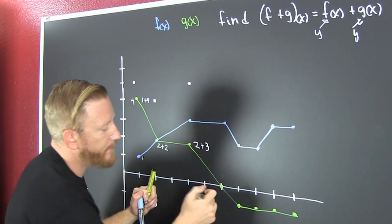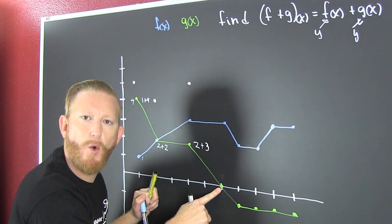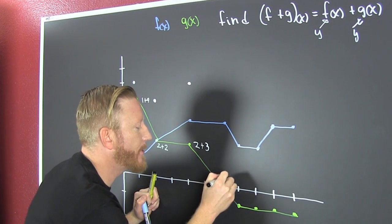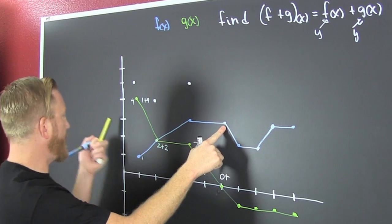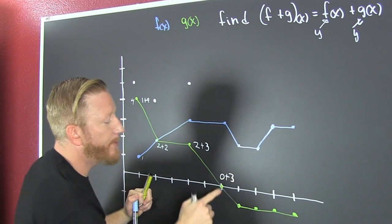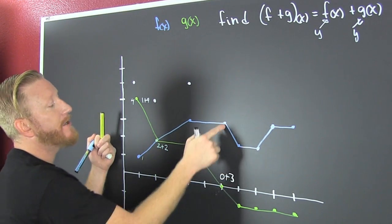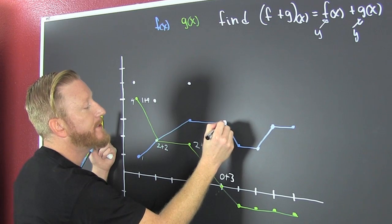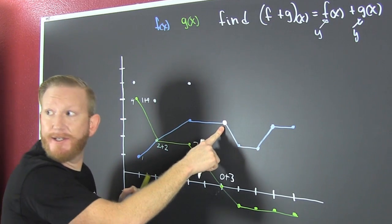Now, what's this X value? Oh, pardon. What's this Y value? Zero. Plus, what's that Y value? Three. Zero plus three is three. So my next value is going to be right there when I'm adding these guys graphically.